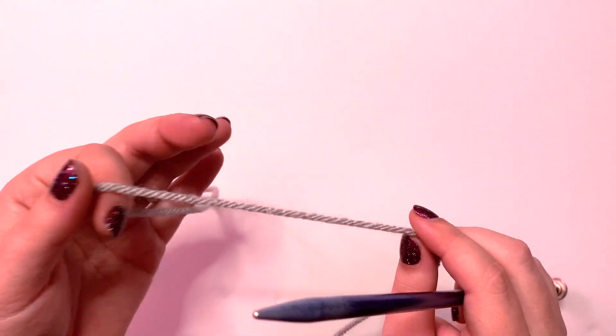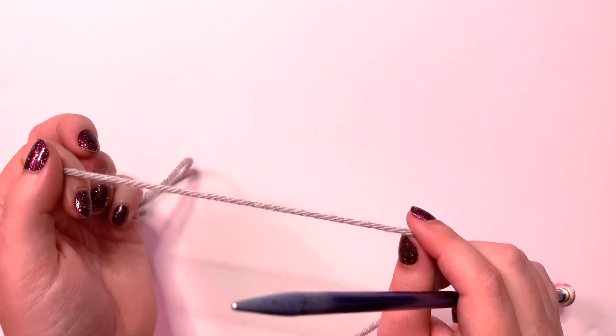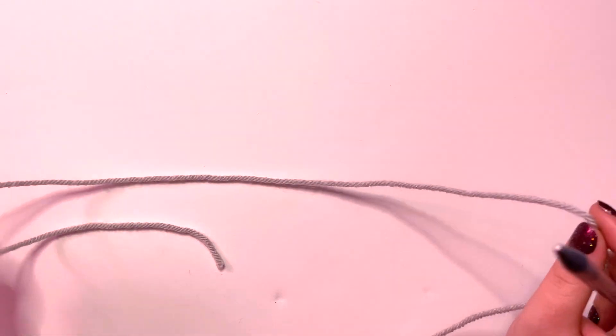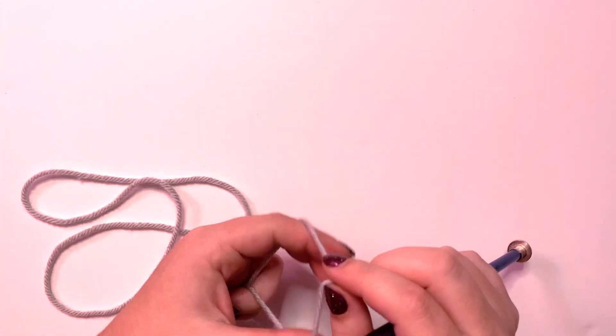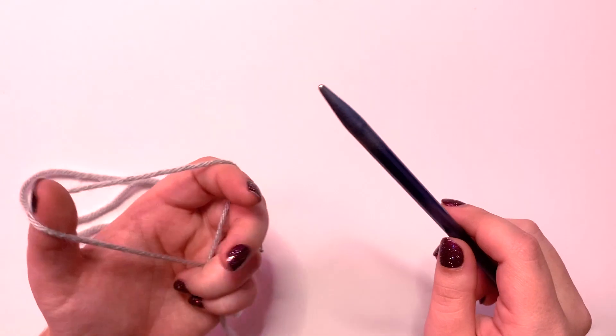What we're going to want to do is we're going to need to cast on 35 stitches. If you leave 18 inches or so you should be fine, and we can always rip back if we don't have enough yarn.